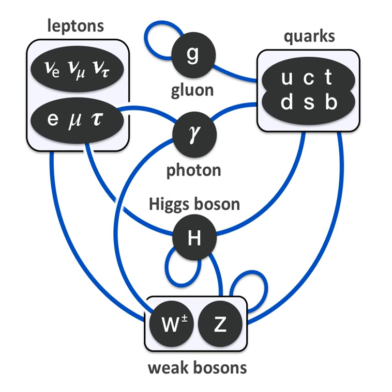The Standard Model includes members of several classes of elementary particles, which can be distinguished by characteristics such as color charge. All particles can be summarized as follows: the antielectron is traditionally called the positron. The known force-carrier bosons all have spin-1 and are therefore vector bosons. The hypothetical graviton has spin-2 and is a tensor boson; whether it is a gauge boson as well is unknown.